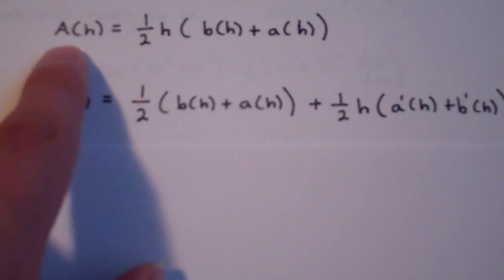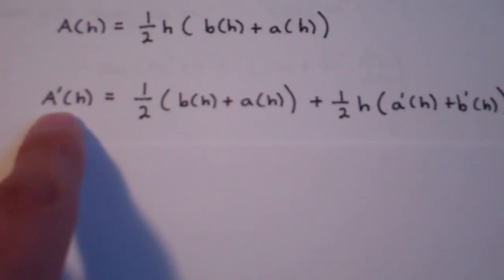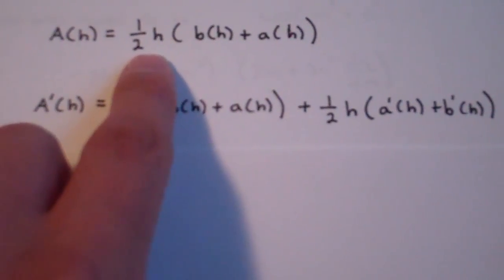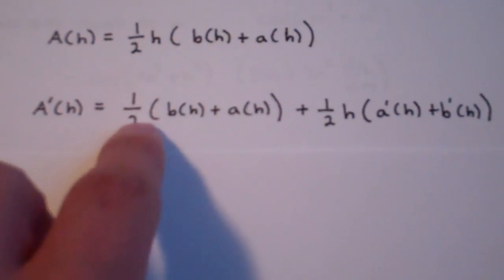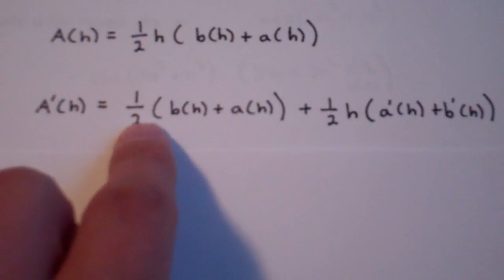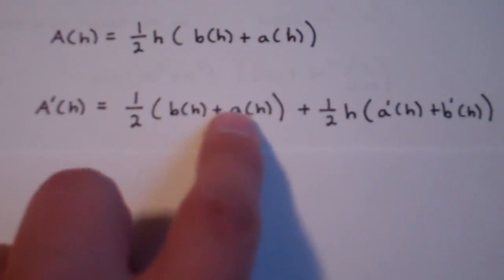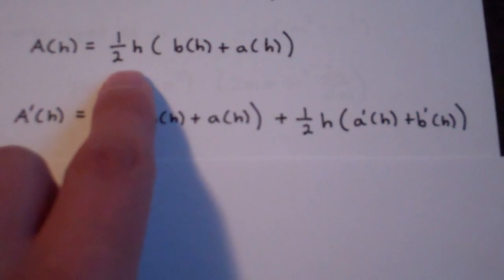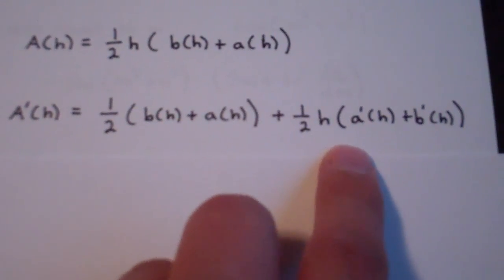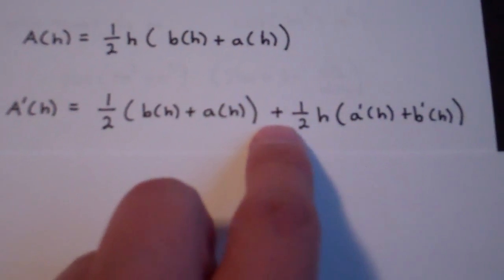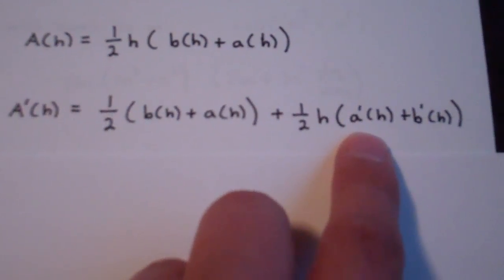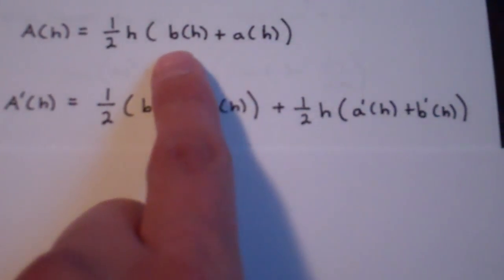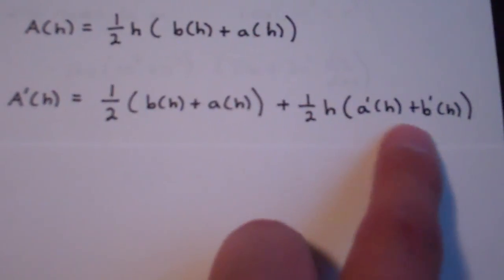The derivative of a of h is a prime of h. And using the product rule on the other side, the derivative of one-half h is just one-half, multiplied by the second function, plus the first function one-half h multiplied by the derivative of the second function, which would be b prime of h plus a prime of h.